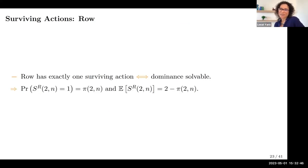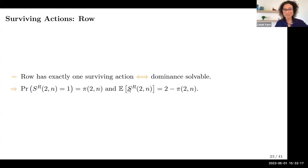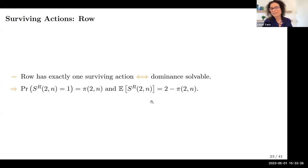For the last facet of complexity — the number of surviving actions — for row this is a fairly straightforward calculation. Row has exactly one surviving action if and only if the game is dominant solvable, which we've already characterized. The resulting expectation of the number of surviving actions for row is two minus this probability, so asymptotically we don't have much hope of restricting row's number of actions.